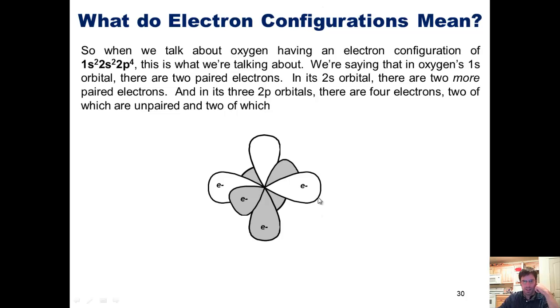Two of which, these two along this x-axis 2p orbital, are paired. And the other two, one in the y-axis and the other on the x-axis, are unpaired.